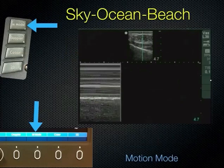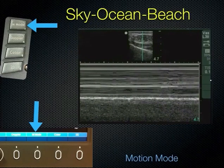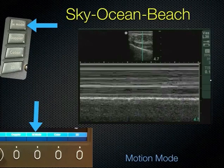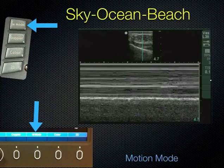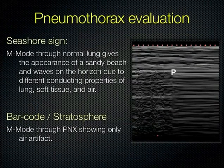Moving on to M-mode. If you put an M-mode line through the pleural interface and watch over time, you get an image called sky-ocean-beach, also referred to as the seashore sign. The soft tissue creates a striped appearance. The pleural line is bright white — like where the ocean meets the land. If the lung is sliding underneath, you get a grainy effect due to the motion — that graininess is the beach. Sky-ocean-beach is normal. If the lung has dropped, the beach disappears and you have a barcode or stratosphere sign — just stripes the whole way down.